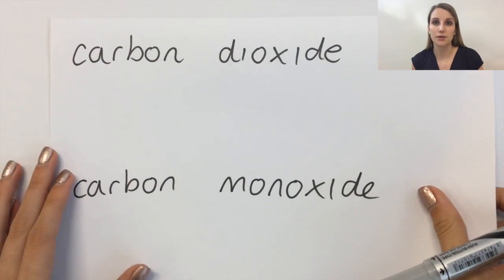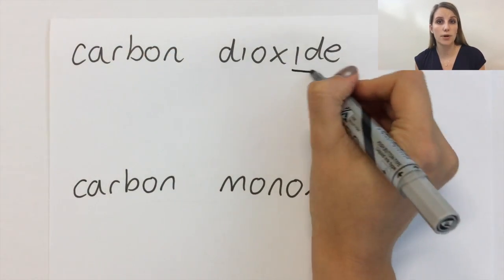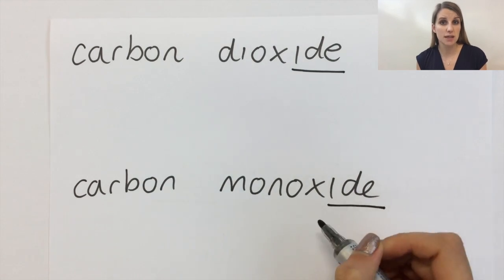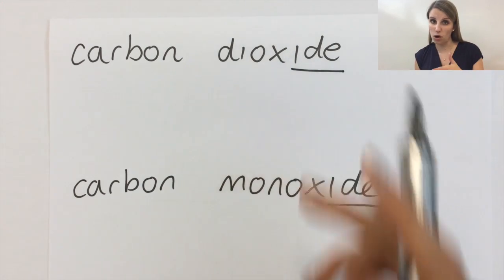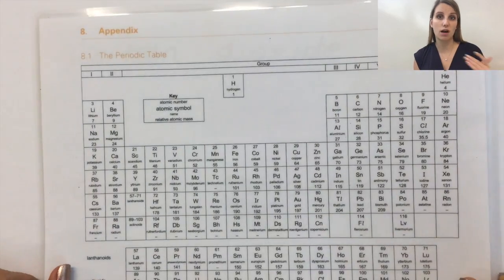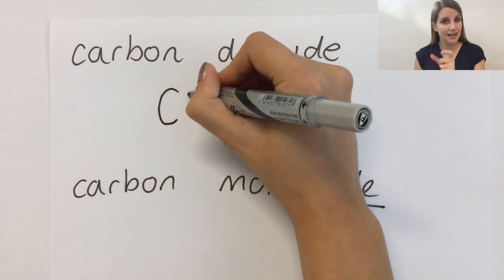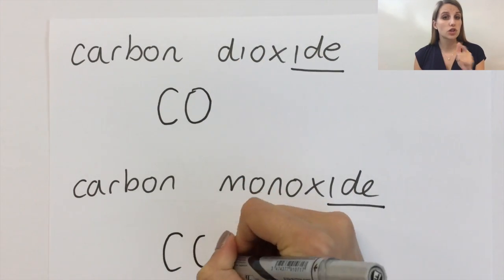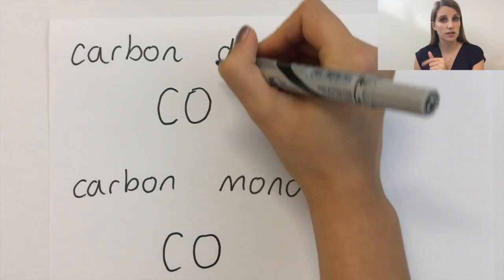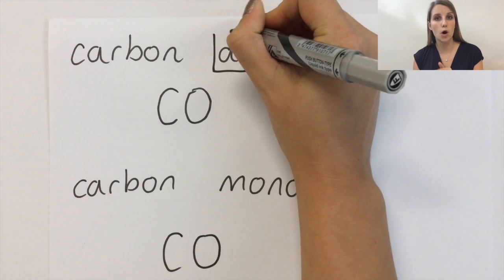Here's two more examples. I've got carbon dioxide and carbon monoxide. You can see that both of them are carbon oxides. Both of them contain carbon and oxygen. The difference between them is that little word in the middle. The top one says carbon dioxide. The bottom one, carbon monoxide.